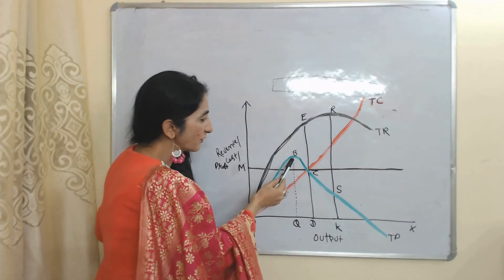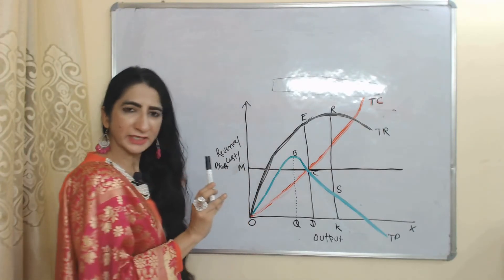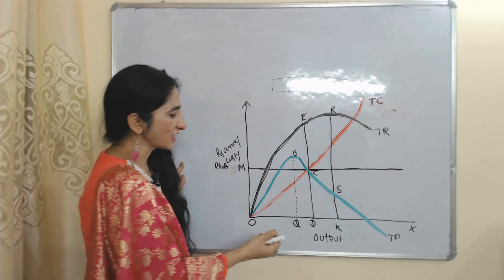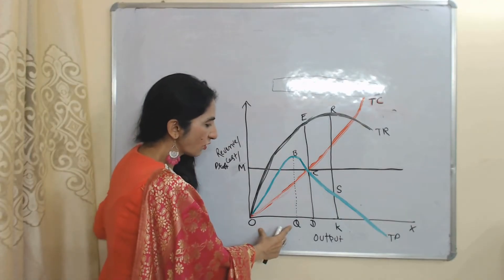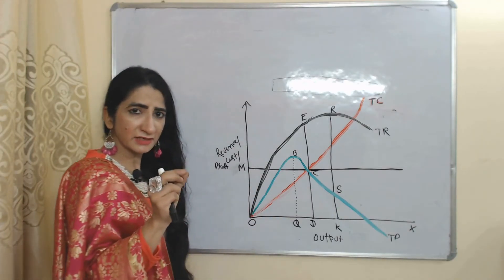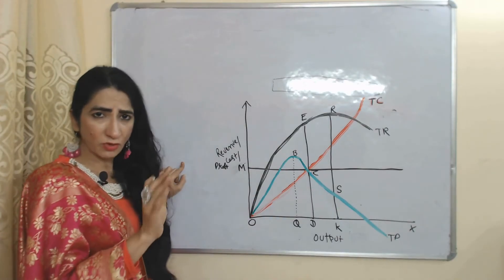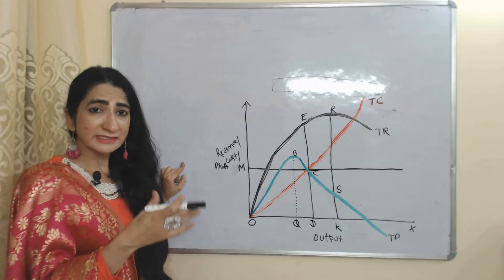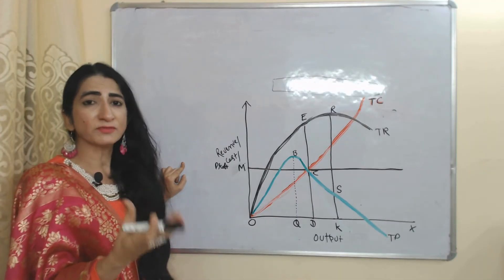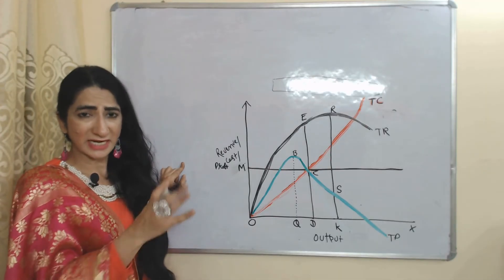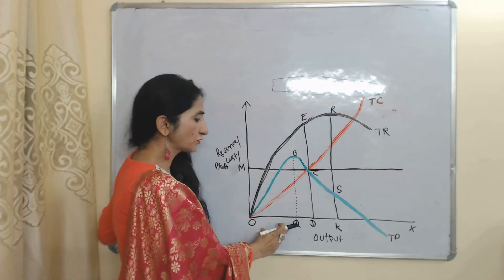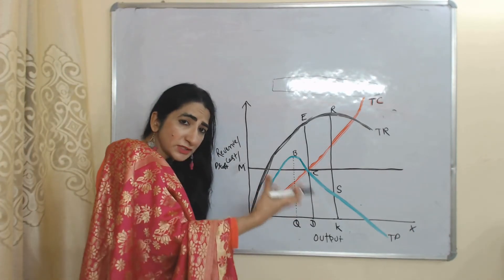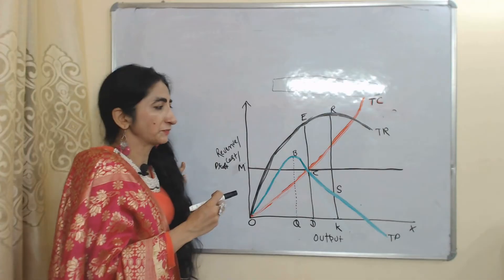At point B, our profit is maximum, and the profit maximization output is OQ. But here our objective is not profit maximization — our objective is sales revenue maximization. That is why we will not produce OQ amount of output; we will produce more than OQ.